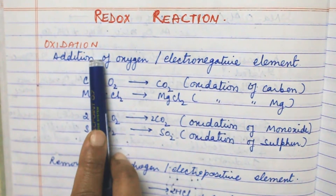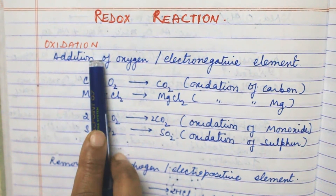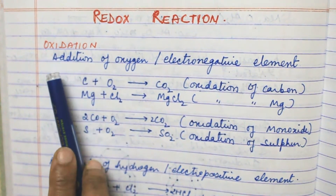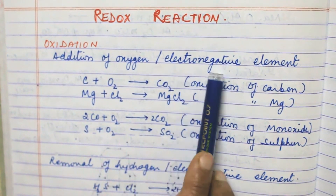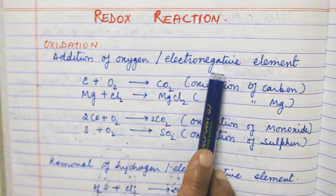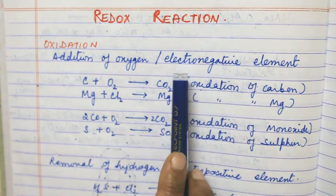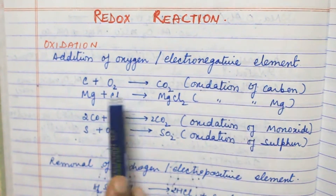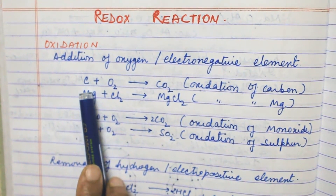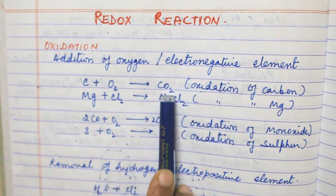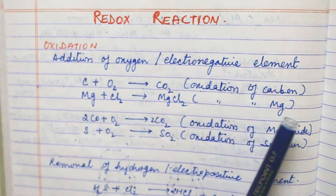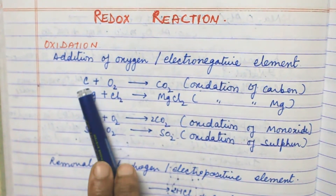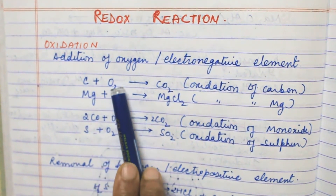First, we have to discuss oxidation and reduction. So what is oxidation? The first definition is addition of oxygen or electronegative element — oxygen has a negative charge, that is why it is an electronegative element. For example, when C combines with O2 they form CO2, and it is the oxidation of carbon because carbon gets attached to oxygen.